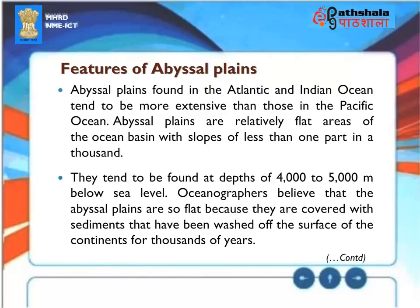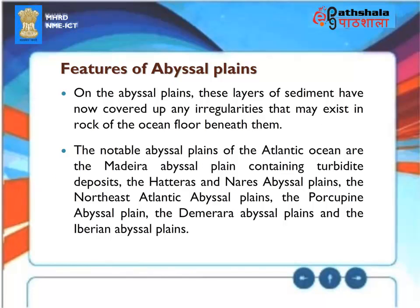Abyssal Plains in the Atlantic and Indian Oceans tend to be more extensive than those in the Pacific. They are relatively flat areas with slopes of less than one part in a thousand, found at depths of 4,000 to 5,000 meters. Sediments washed off continents for thousands of years have covered any irregularities in the rock beneath. Notable Abyssal Plains of the Atlantic include the Madeira Abyssal Plain, the Hatteras and Nares Abyssal Plains, the Northeast Atlantic Abyssal Plains, the Porcupine Abyssal Plain, the Demerara Abyssal Plains, and the Iberian Abyssal Plains.